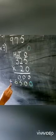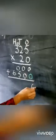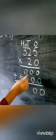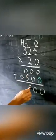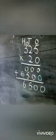Now we are going to add them. 0 plus 0 is 0. 0 plus 0 is 0. 0 plus 5 is 5. And 6 as it is. Now we have 6500.